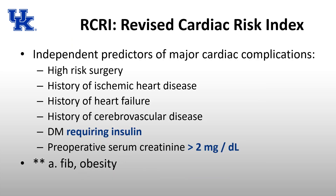The first keyword I want to discuss is the revised cardiac risk index, or the RCRI. This is a list of six independent predictors of major cardiac complications. They've been shown in studies to increase the risk of cardiac complications postoperatively. The first independent predictor is high-risk surgery — the type of surgery itself. Major vascular surgery, open intraperitoneal surgery, and intrathoracic procedures are all examples that give you one point on the RCRI.